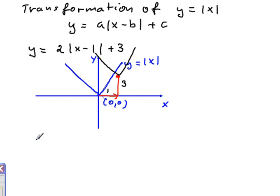Just remember what would happen if the coefficient in front was negative. So let's look at the graph of y equals negative 2 times absolute value of x plus 3 minus 1.